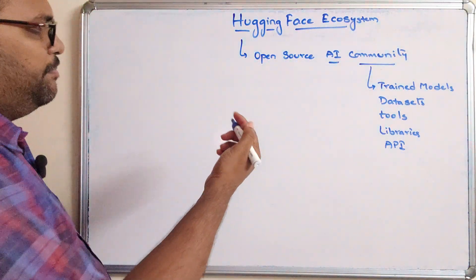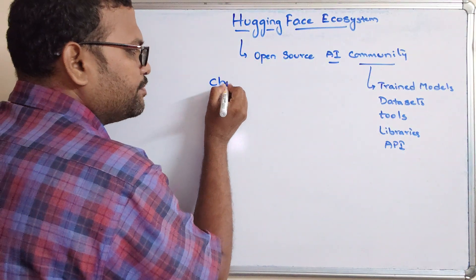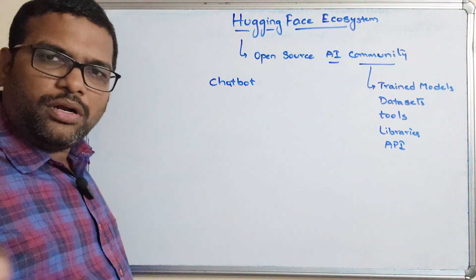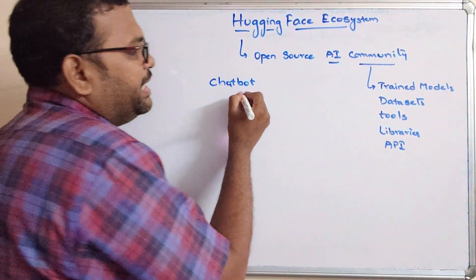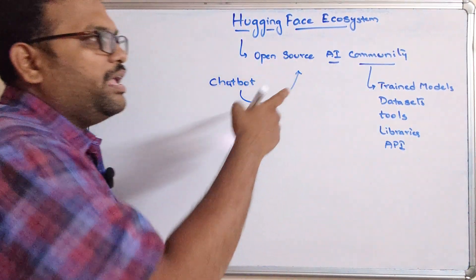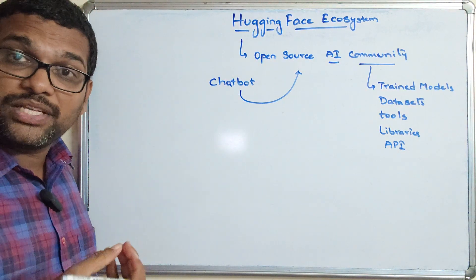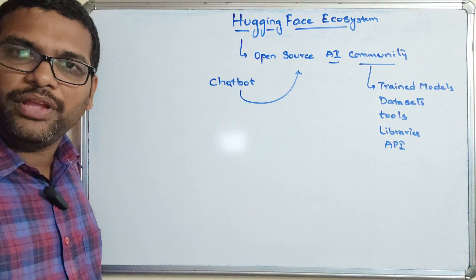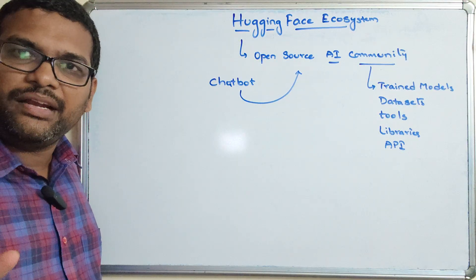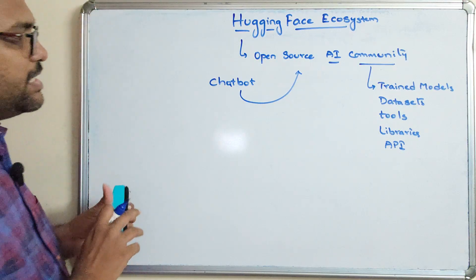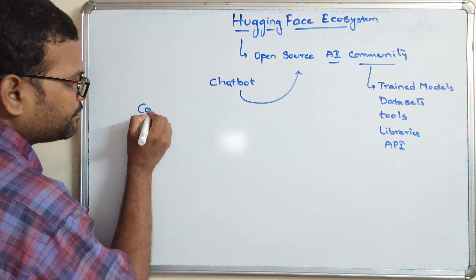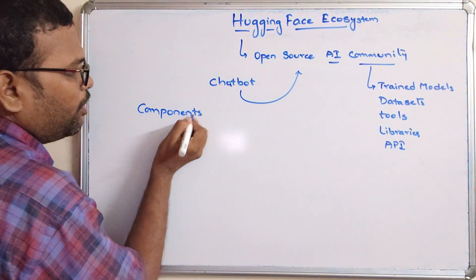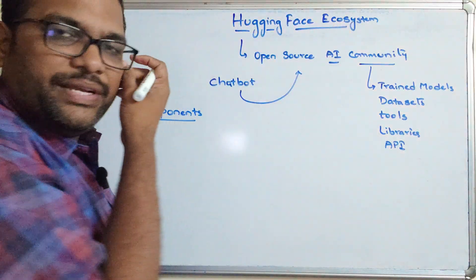Initially it was a chatbot, and later it was developed into an AI community. We can also call it a supermarket for AI, where we can get everything related to AI. Now we'll see what are the components of this Hugging Face ecosystem.